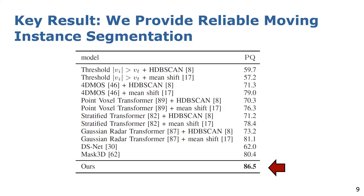We perform the evaluation on the RadarScenes dataset and compare our radar instance transformer with state-of-the-art methods. The transformer-based methods enhance the performance compared to the voxel-based 4DMOS, which suggests that discretization artifacts lead to information loss that cannot be compensated by additional temporal information. Furthermore, all learning-based approaches outperform a simple velocity threshold due to the noise in the radar scans. Additionally, our model outperforms Math3D, which utilizes powerful mask predictions, and other radar-specific methods such as the Gaussian radar transformer. Overall, we set a new state-of-the-art performance for moving instance segmentation in sparse and noisy radar point clouds.